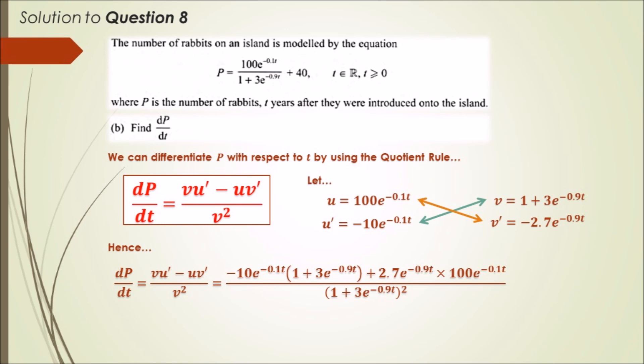Plus 2.7e^(-0.9t), then I multiply this against u, which is 100e^(-0.1t), and put this all over v squared. v squared is just (1 + 3e^(-0.9t))². This is the end of the answer.